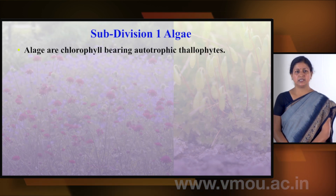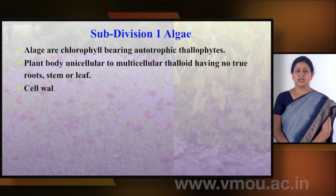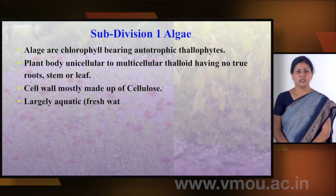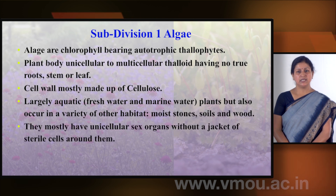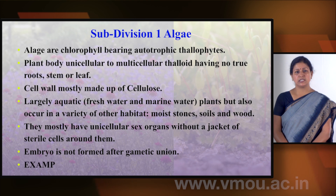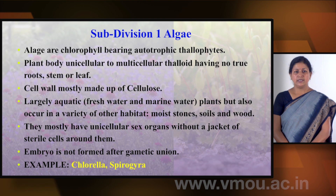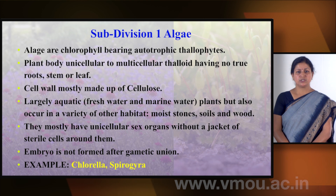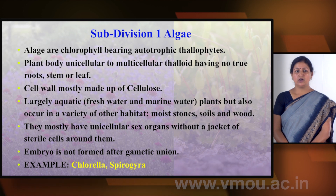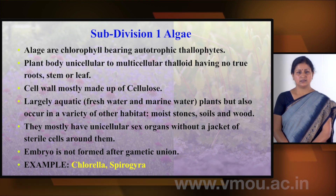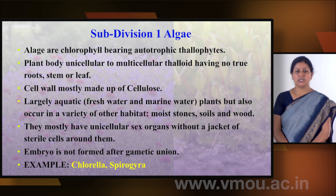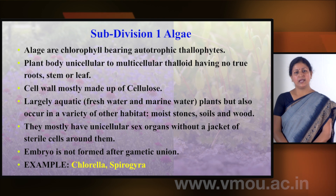The first sub-division is algae. Algae are chlorophyll-bearing autotrophs. The plant body can be unicellular or multicellular, but the structure is thaloid — root, stem, and leaves are not differentiated. They have a cell wall. They are mostly aquatic but also found on moist stones, soils, and wood. Sex organs are unicellular and sterile jacket cells are not found. Examples are Chlorella and Spirogyra.